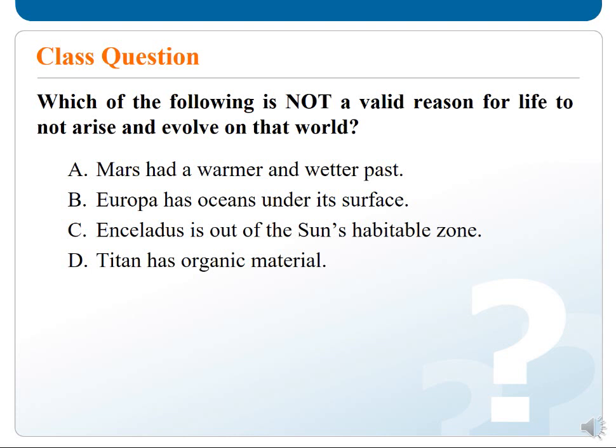Class question: Which of the following is not a valid reason for life not to arise on that world? Choice A: Mars had a warmer and wetter past. Choice B: Europa has an ocean under its surface. Choice C: Enceladus is out of the Sun's habitable zone. Choice D: Titan has organic material. The answer is C — Enceladus is out of the Sun's habitable zone — and that is a valid reason that life will not arise.